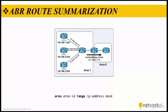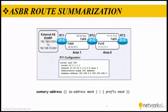Here is how we can summarize routes on the ABR. The command used on the ABR is 'area [area-id] range [IP address] [mask]'. This is the most important thing to focus on. If you want to summarize on the ASBR, which is router 1 in this example, we use the 'summary-address' command instead, followed by the IP address and mask.